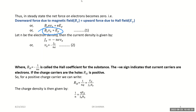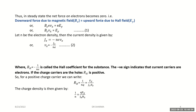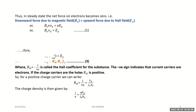Now we convert this equation using the definition of current density. Current density J_x is equal to −n·e·v_x; the minus sign shows that the current carriers are electrons. From this, v_x equals −J_x divided by n·e. Substituting v_x from equation 2 into equation 1, B_z·v_x becomes −J_x/(n·e) on the left side, giving E_y equal to R_H·B_z·J_x on the right side.